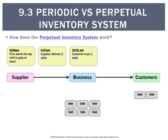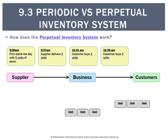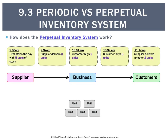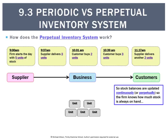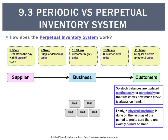At 10:39 a customer buys three more units — we update our perpetual system so we know there are three units left. At 11:17 on the same day we order another two units from a supplier, so we know we've got five left. This is the point where you call up Rebel Sport and they say five, because of their perpetual inventory system — all this information is recorded continuously, or perpetually. Lastly, we would also do a physical stock take to verify there are actually five units on hand.